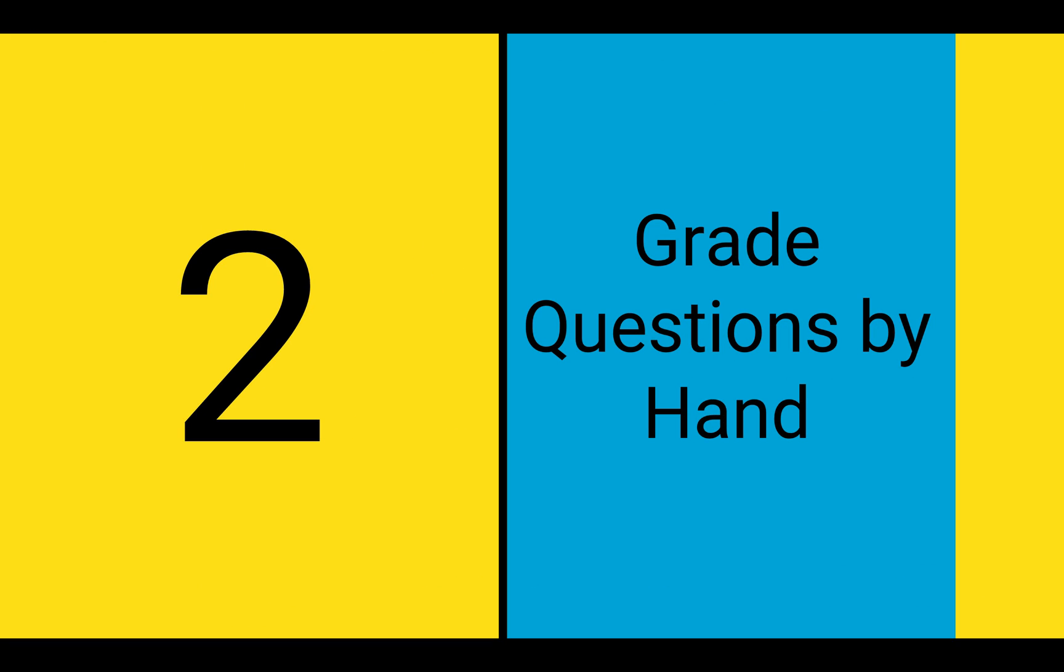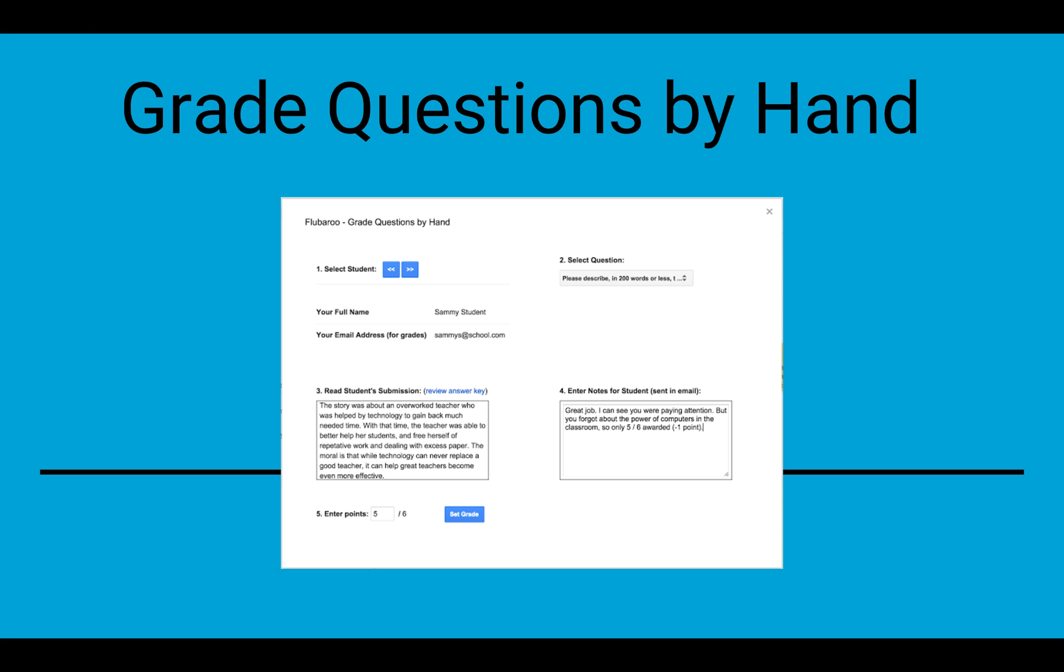Number 2. Grade questions by hand. Don't want Fluberoo to assign a score automatically? No problem. You can grade questions by hand and assign any score you wish after reviewing the student's submission. Even enter optional notes for the student to be shown in their email.